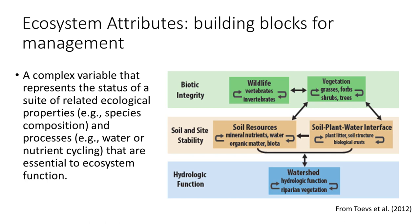Ecosystem attributes capture the components and dynamics that define an aspect of an ecosystem. For example, growth and reproduction of vegetation in a rangeland is tied to the existing plant community on a site, interactions from insects like pollinators and wildlife, and influences from soils and available water.